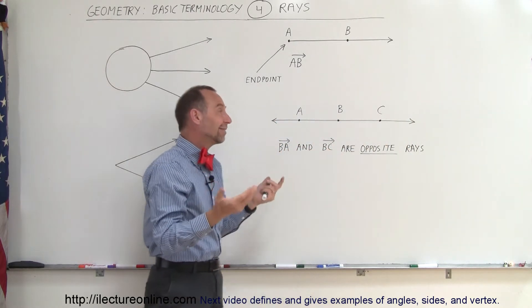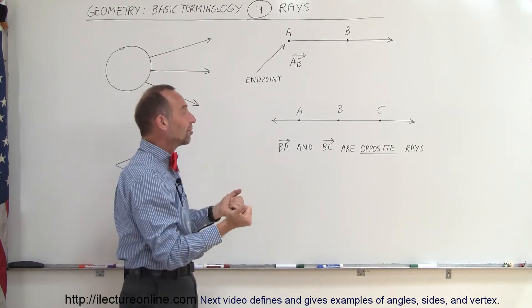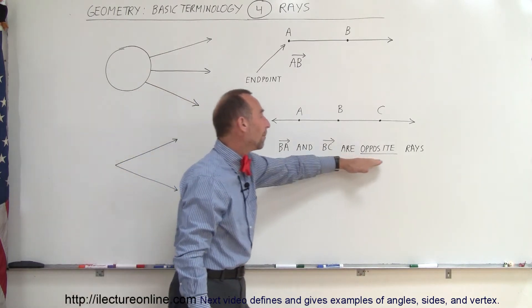So here we have a line AC or two rays that are in opposite directions, so therefore they're called opposite rays.